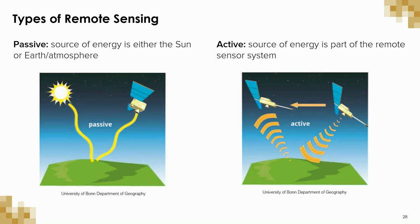The other option is active remote sensing. Active remote sensing is when the source of energy is part of the satellite system itself. Examples of this include radar and LiDAR, where light like radio waves or a laser is actually fired from the satellite and the radiation that is reflected back from the target will be used to map the terrain.